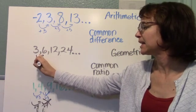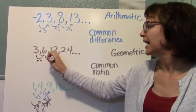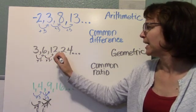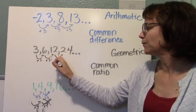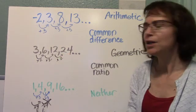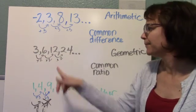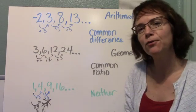Here, to get from 3 to 6, I can multiply by 2. Then to get from 6 to 12, also multiply by 2. And to get from 12 to 24, multiply by 2. So here, I'm multiplying instead of adding. This is called a geometric sequence, and this 2 is called the common ratio.